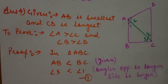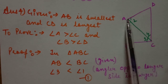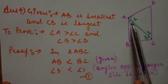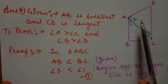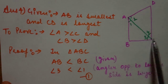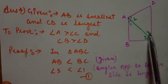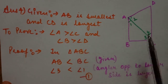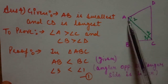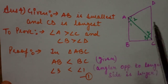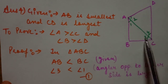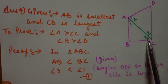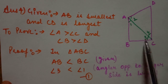We will apply a construction: join AC. This line AC divides angle A into two parts — angle 1 and angle 2 — and also divides angle C into two parts — angle 3 and angle 4. We want to prove angle A is greater than angle C. In triangle ABC, angle 1 is part of angle A and angle 3 is part of angle C, so we only need the relation between angle 1 and angle 3.